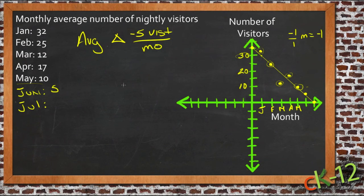Down five visitors per month. So if we then take a look at July, we're going to go from June to July, that's one more month. We're going to go down another five visitors. So by July, we would assume that there wouldn't be any visitors, which is the last point we have marked here.